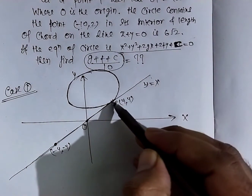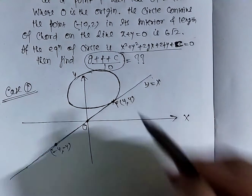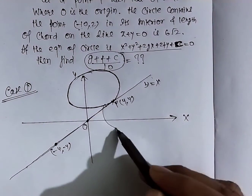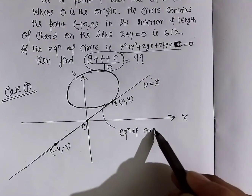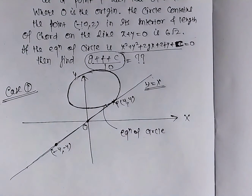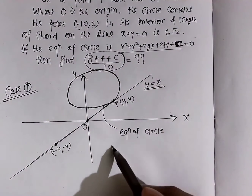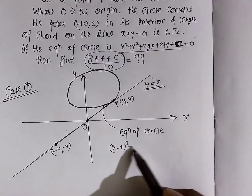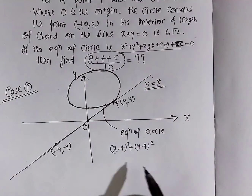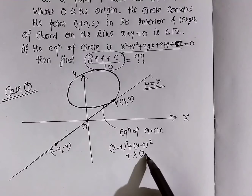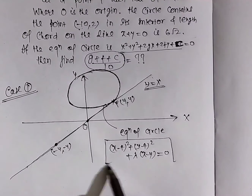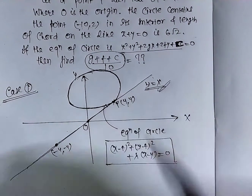अगर circle इस line को (4,4) point पर touch कर रहा है, तो family of circle की equation होगी: (x-4)² + (y-4)² + λ(x - y) = 0. यह वो circle है जो line y = x को point (4,4) पर touch कर रहा है।